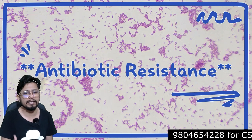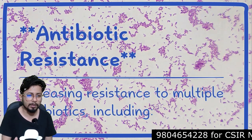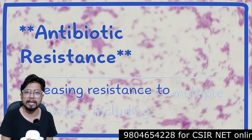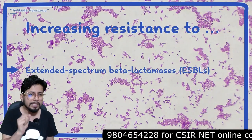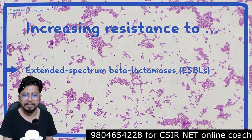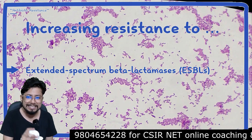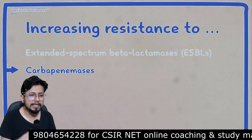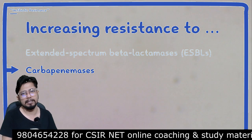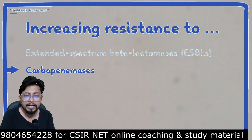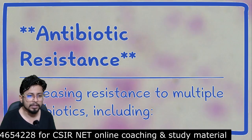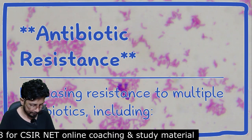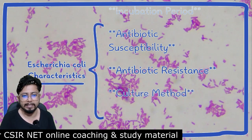However, E. coli also has antibiotic resistance properties. It has increasing resistance to multiple antibiotics, including extended-spectrum beta-lactamases, known as ESBLs. It also produces carbapenemases — structures that can destroy carbapenem antibiotics. So E. coli can resist both beta-lactam antibiotics and carbapenems, and its antibiotic resistance is increasing.